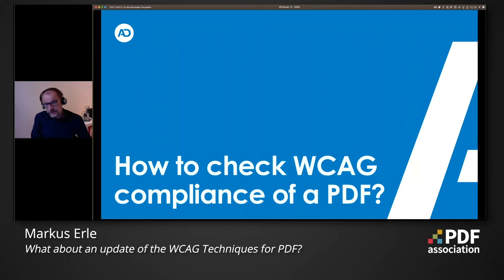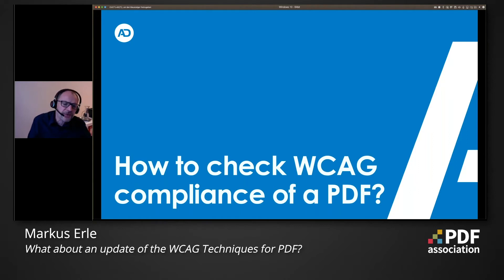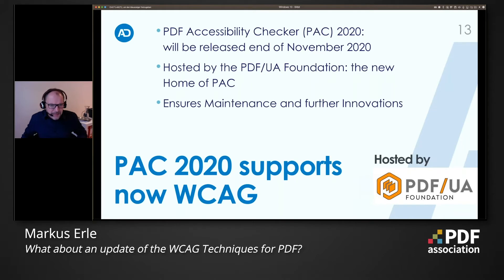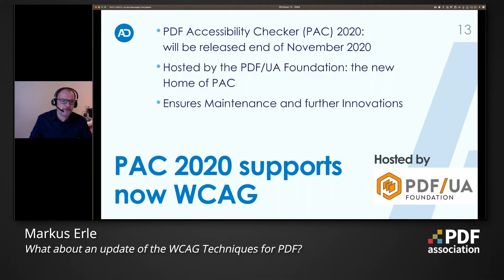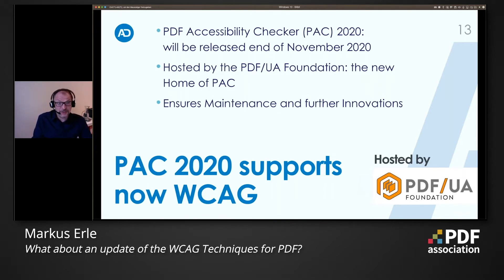A big challenge is how to check WCAG compliance of a PDF. We discovered in the working group that there is really a missing piece: good software that is easy to use and that contains the WCAG checklist. So we initiated further development for PAC. I can pre-announce right now that the new release — PAC 2020 — will be released at the end of November, and it will be hosted by the PDF UA Foundation, its new home.